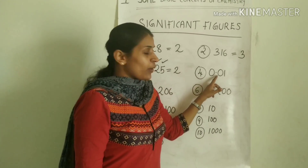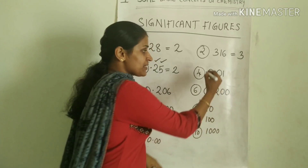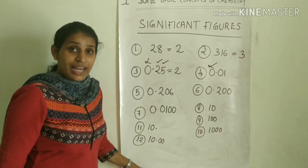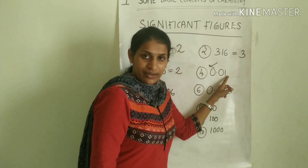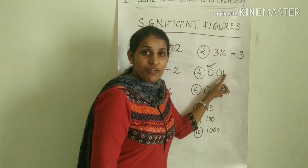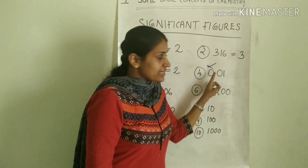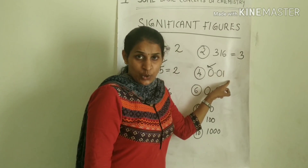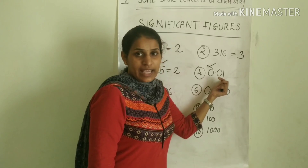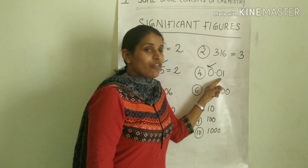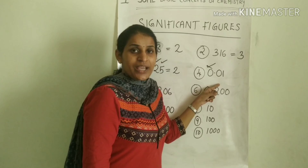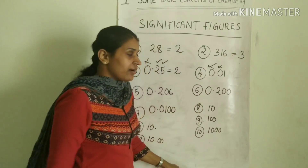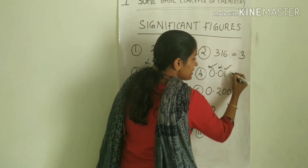Fourth example: 0.01. The zeros on the left side are not significant figures. In 0.01, the zeros before the non-zero value — including the zero after the decimal point — are not significant figures. So here, only one significant figure.